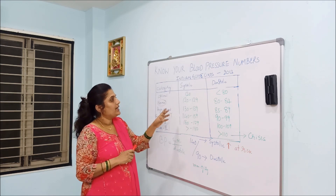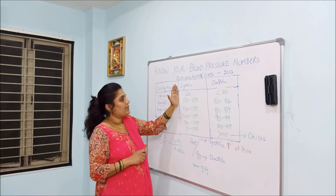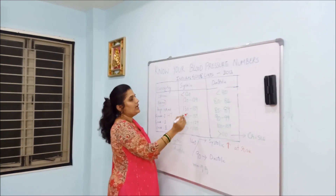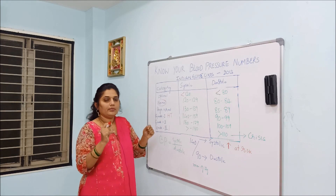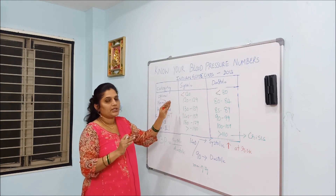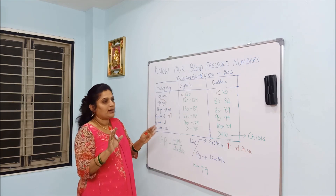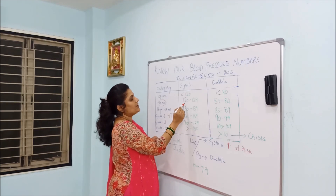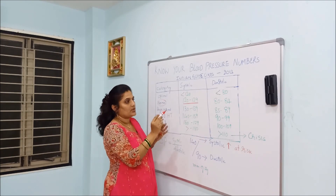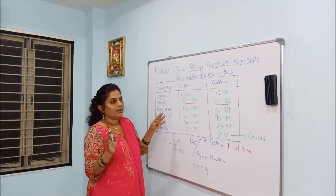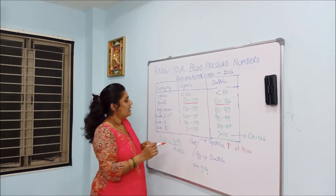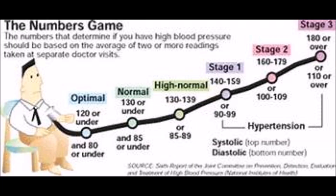If your systolic pressure is less than 120 and diastolic pressure is less than 80, then you are at optimal — you are very healthy. If systolic is 120 to 129 and diastolic is 80 to 84, then you are normal and not at risk. If your systolic is 130 to 139 and diastolic is 85 to 89, you are high normal.